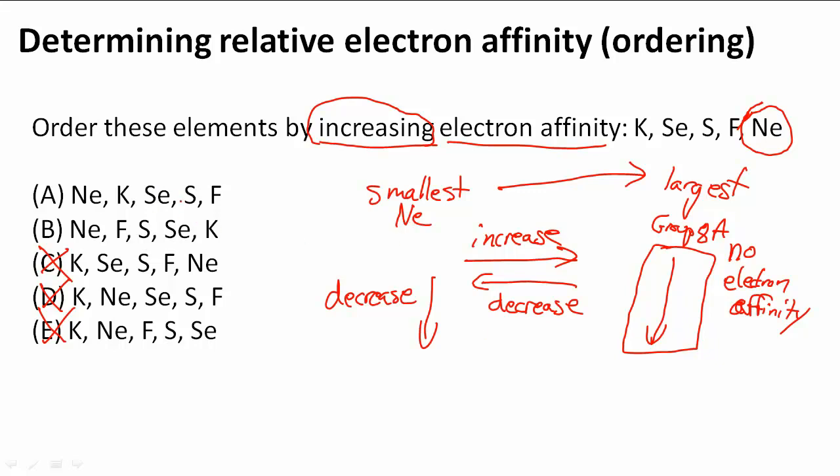So that must mean K and Se because K has a smaller electron affinity than Se. Then we move S. Notice we move up one period so that means we're increasing a little bit more. And then up another period to F. That means we're increasing when we found the largest electron affinity. So A is the answer to this problem.